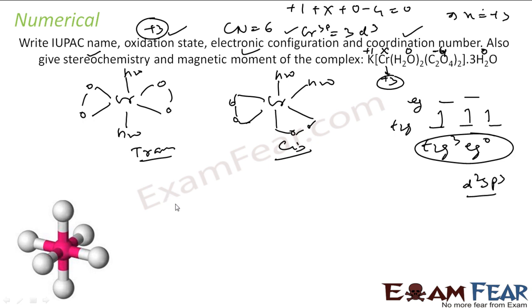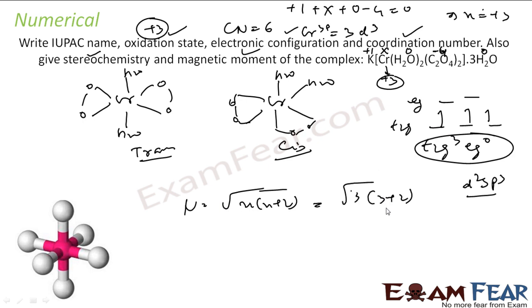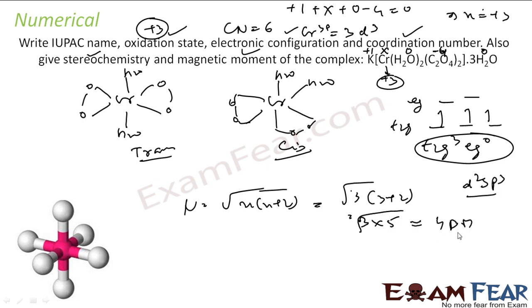Magnetic moment: mu equals root of n(n+2), where n is the number of unpaired electrons. Here we can see three unpaired electrons. So: root of 3 × 5 = root 15, which is almost equal to 3.87 Bohr magneton.